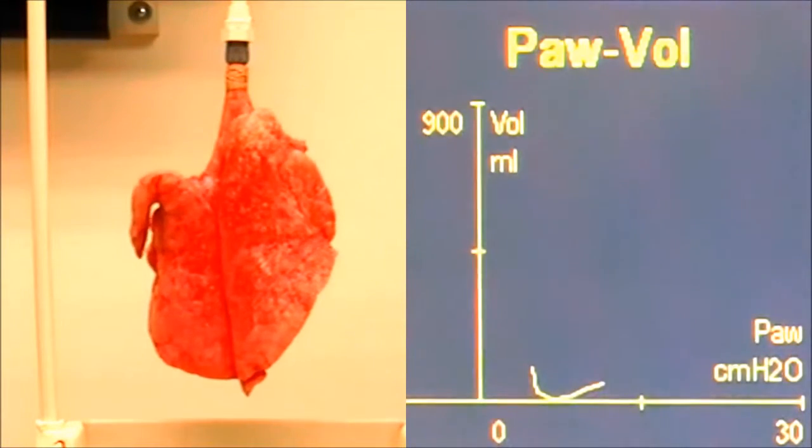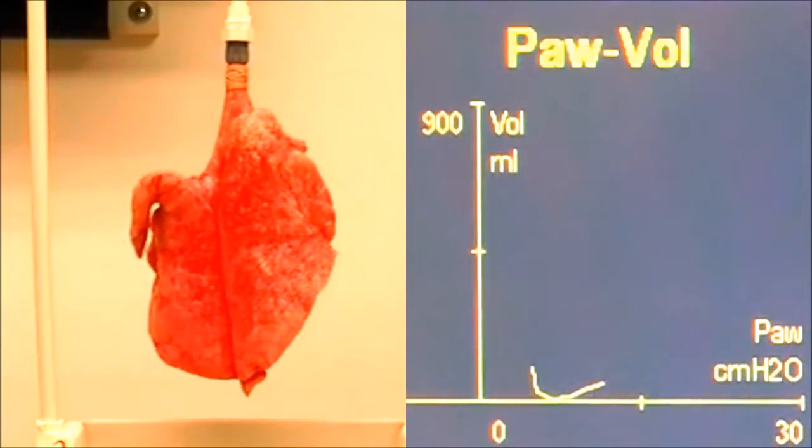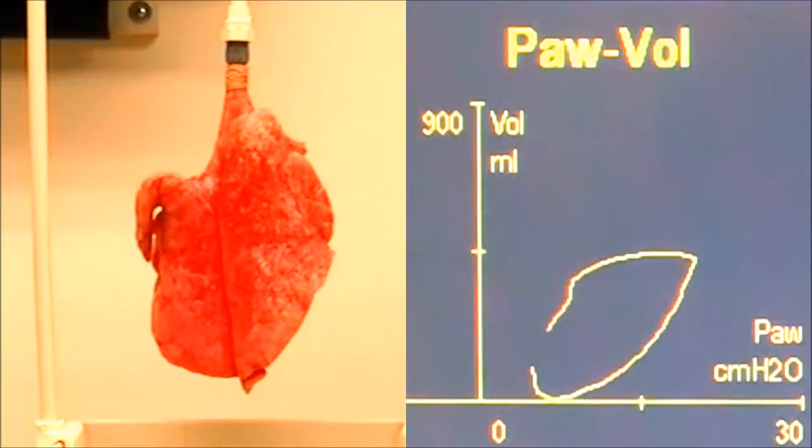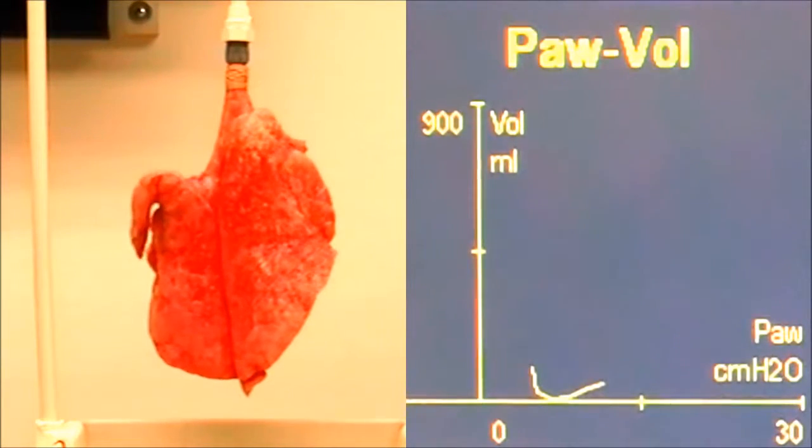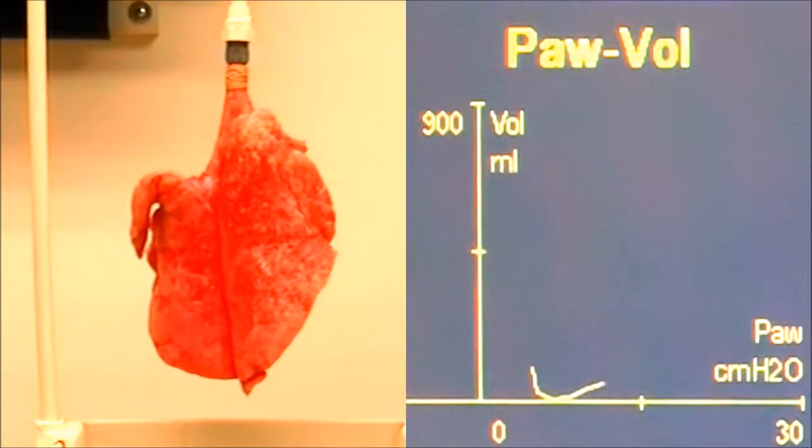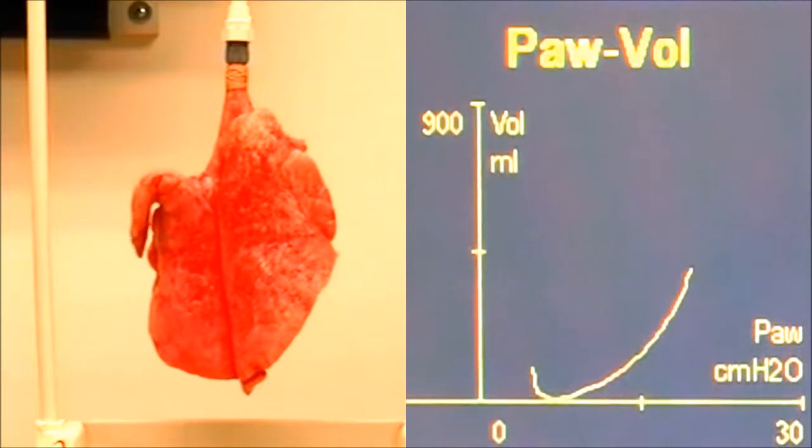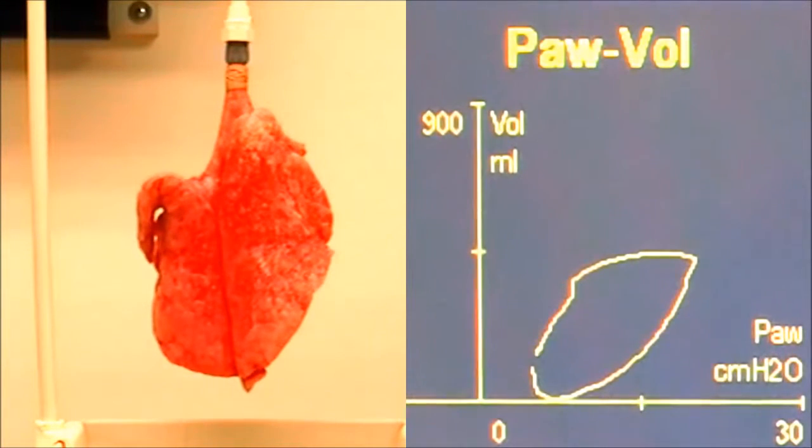In this video, we're going to demonstrate a sustained recruitment breath using the bag. If you take a look at our lungs, you can see that there's a lot of atelectasis in the lungs. The darker areas are atelectatic and the lighter color is aerated. So what we're going to do is show you how to do a sustained recruitment breath.